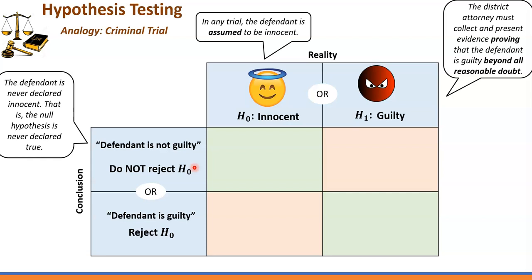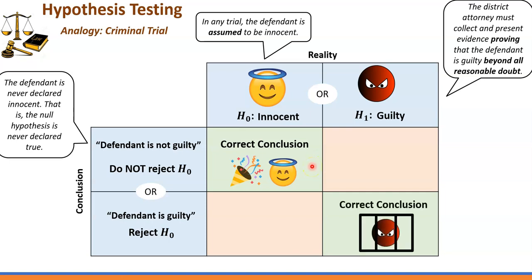Once we draw a conclusion, we have to understand there are four possible outcomes. The first: an innocent person at the end of the criminal trial is declared not guilty — that's a correct conclusion. Another correct conclusion is if a guilty person is declared guilty.